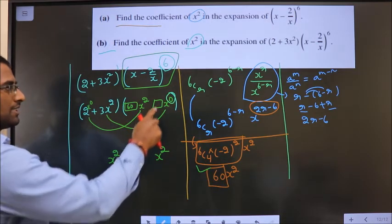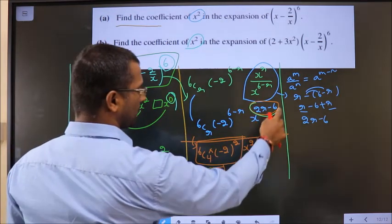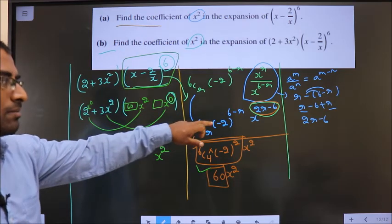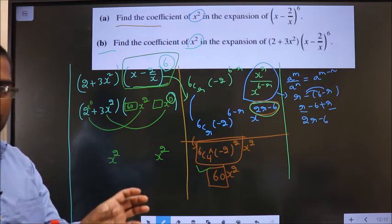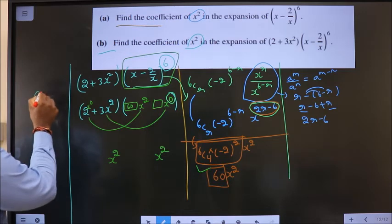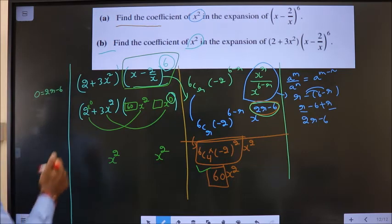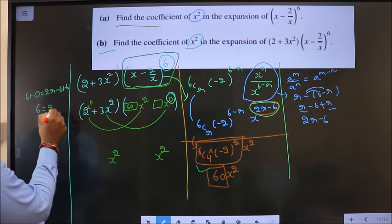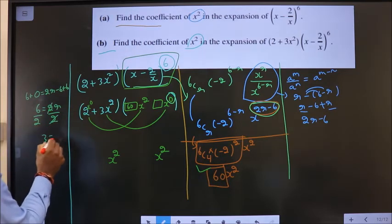Now, x power 2 coefficient we already came to know. In the first bit, it is 60. Now, we should find coefficient of x power 0. So, on x, the power is 0. General term of this has got x power to be 2r minus 6. Equate both the powers of x to get the value of r. So, 0 is equal to 2r minus 6. Now, add 6. So, 6 equal to 2r divided by 2. So, 3 equal to r.